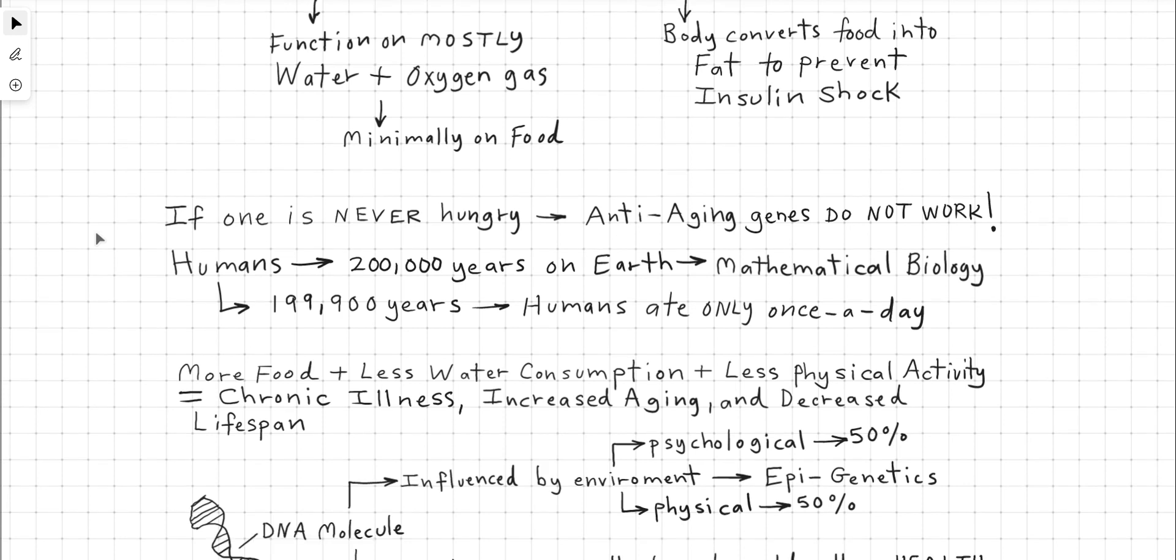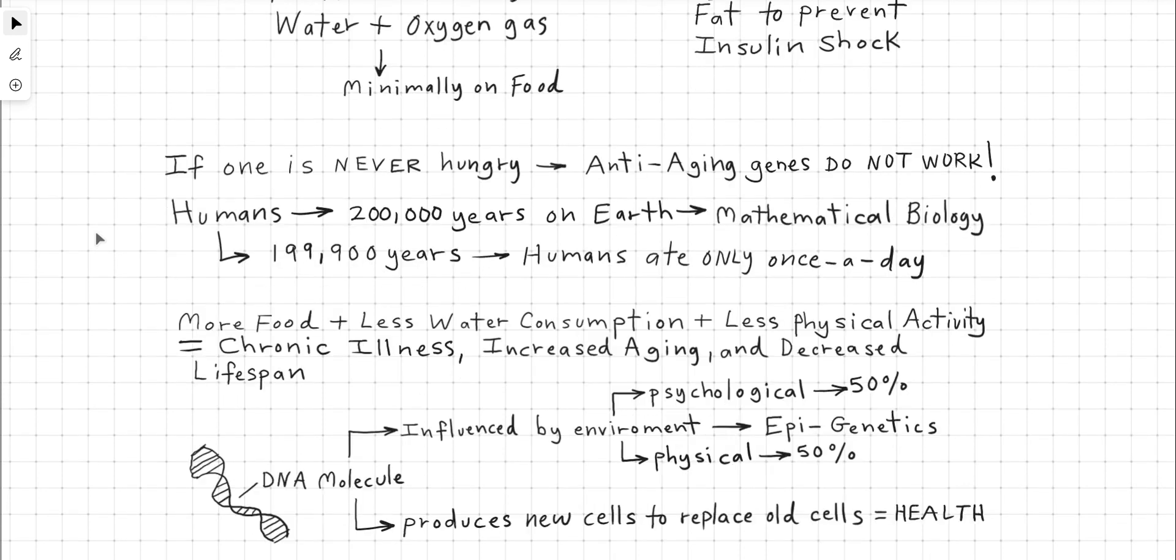Another point to make, if one is never hungry, their anti-aging genes do not work. Humans have been on the earth for 200,000 years as proven through mathematical biology, doing quantitative analysis on DNA regression of human DNA. There's nothing before 200,000 years on a scientific model. Of those 200,000 years, 199,900 years of human existence, humans ate only once a day. They were foraging for food and whatnot.